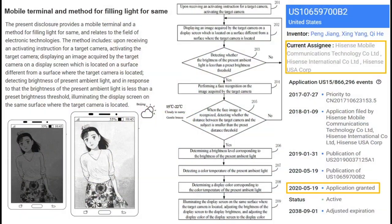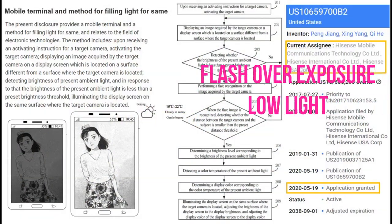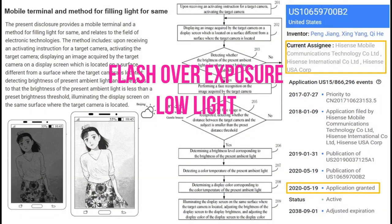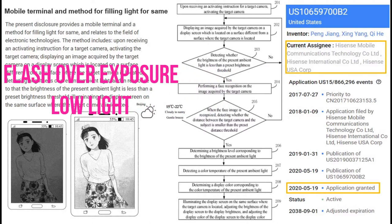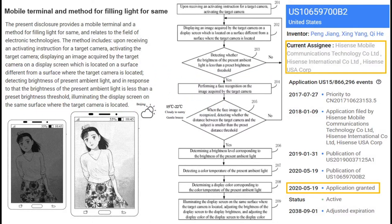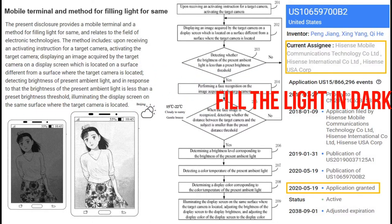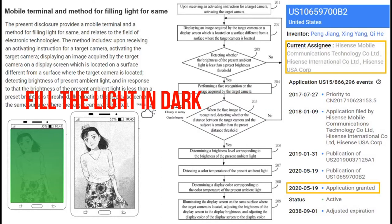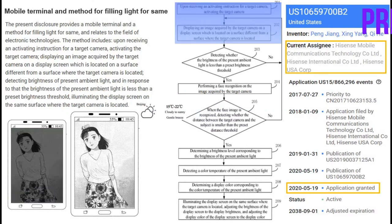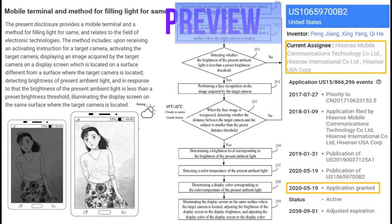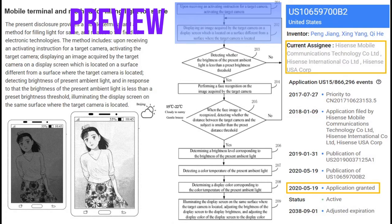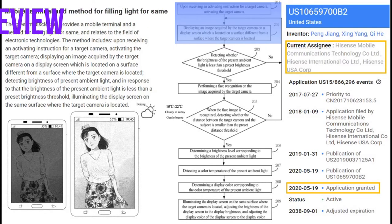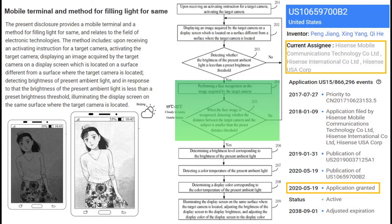Coming to the patented invention. It solves overexposure of light due to flash in low light conditions. There are multiple steps involved to fill the light in a dark environment. In preview mode, if there is a need to fill the light, then follow the steps. 1. Using face detection, find the distance of the object from the camera.